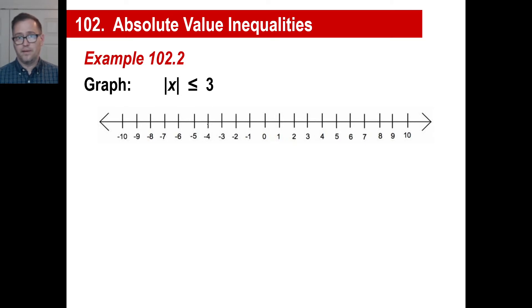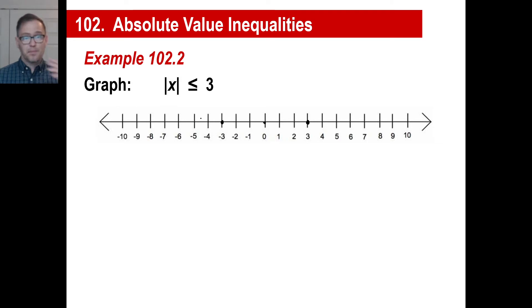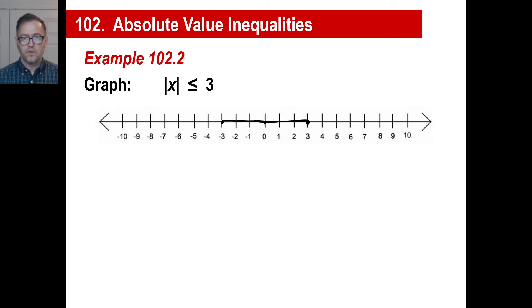You could also say negative four — the absolute value of negative four is four, which is not less than or equal to three. That doesn't work either. But zero works, and everything inside works. Three works as well, and negative three works too, because the absolute value of negative three is less than or equal to three. So everything inside here works, including three and negative three, because that's an equal to.